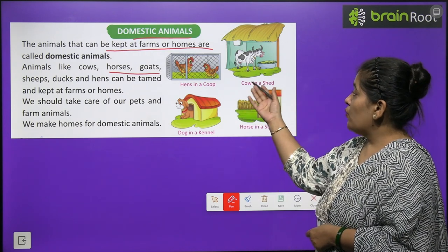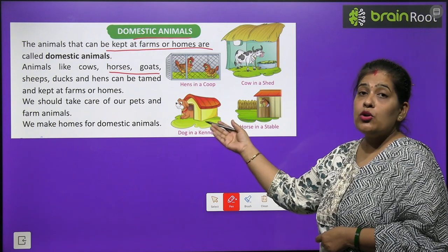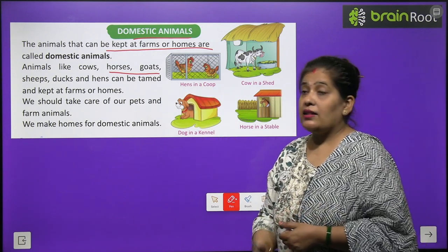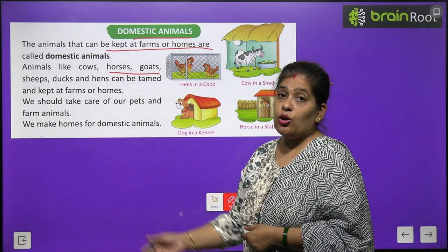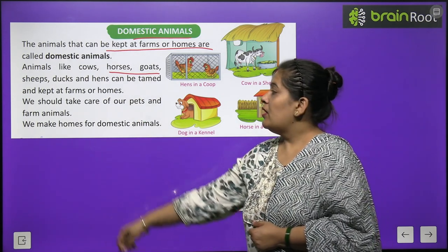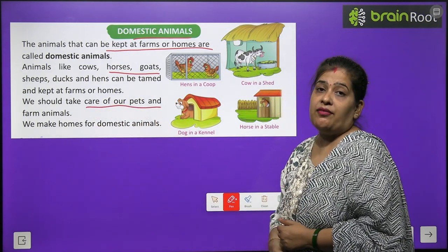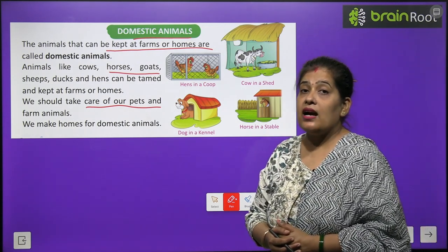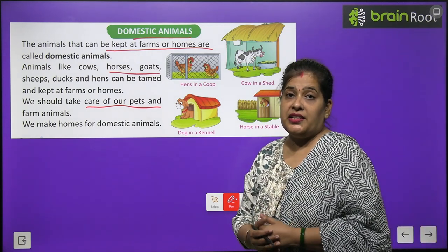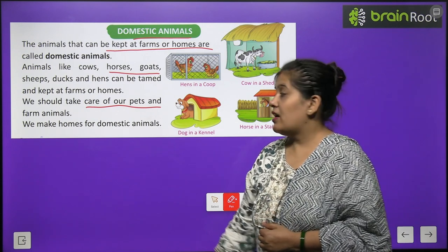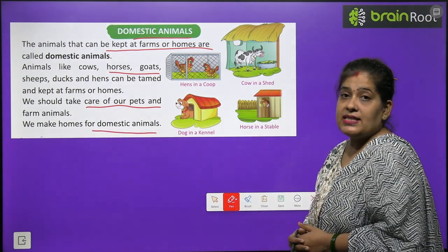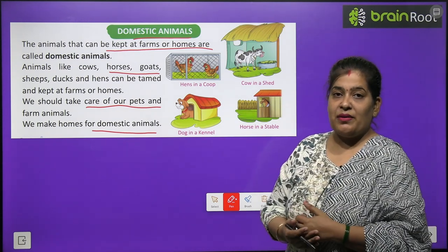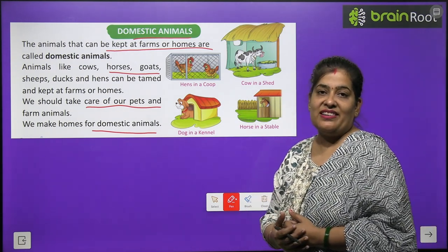Kya wo kaunse janvar hain? Gahe, kutta, ghoda, murgi, bat tak — in sab ko hum kya karte hai? Paalte hai. Kahan par? Apne gharon mein ya phir farm par. We should take care of our pets and farm animals. Hame apne pets aur farm animals ki care karni chahiye, unka dhyan rakhna chahiye. We make a home for domestic animals. Hame domestic animals ke liye ghar banate hai jis mein janvar rehte hai.